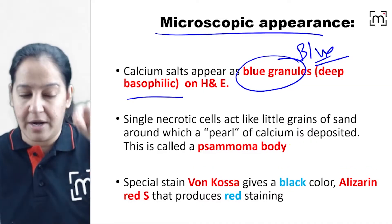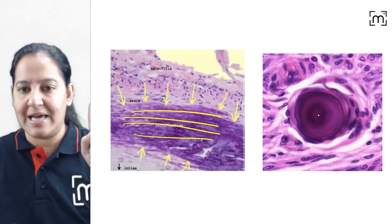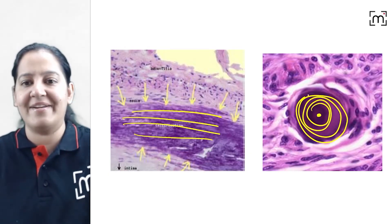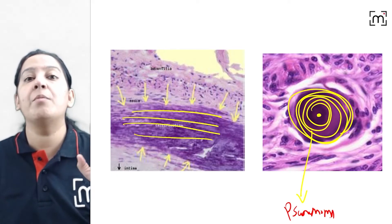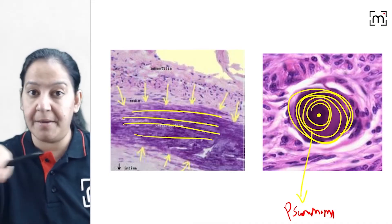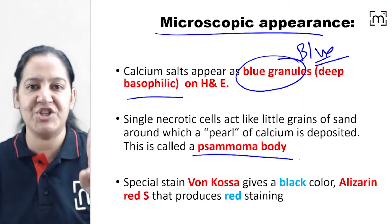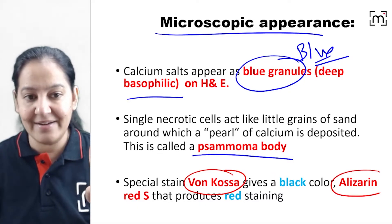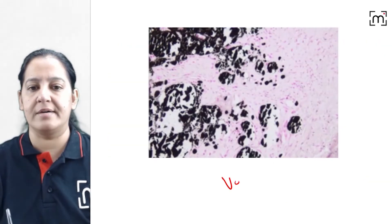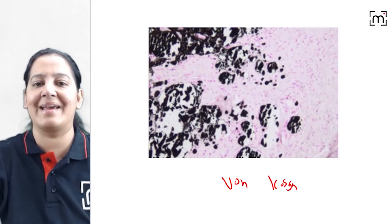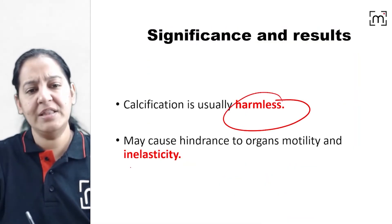Sometimes calcium is arranged in layers around a central pearl — this is known as a psammoma body (the 'p' is silent). A psammoma body is the deposition of calcium in concentric laminated layers. To see calcium with special stains: with Von Kossa stain, calcium appears black; with alizarin red stain, calcium appears red.